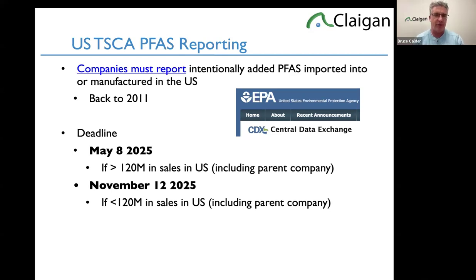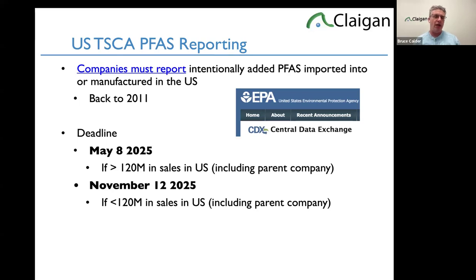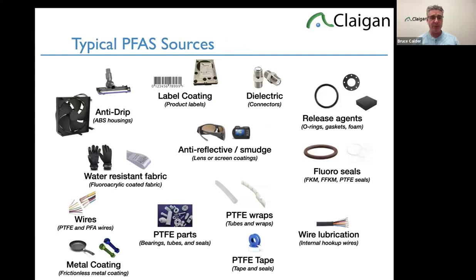Once you search for 'streamlined' you'll find the parts that really apply and exactly what you have to do. You have to report your PFAS importation or manufacture volumes back to 2011 — basically 2011 to 2023. The deadline, if you include your parent company at over $120 million sales a year, is May 8th. Under $120 million it's November 12th next year. Where is PFAS in products? Everywhere: the anti-drip agent in ABS plastic like a 94V-0 outer housing, your safety labels which are fluorocoated so they're indelible, barcodes which are normally fluorocoated, water-resistant fabrics, and release agents for gaskets.